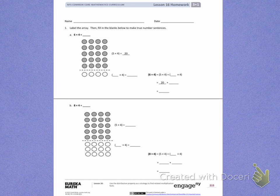This is Module 1, Lesson 16. Today's objective was to use the distributive property as a strategy to find related multiplication facts. Number 1. Label the array. Then, fill in the blanks below to make true number sentences.